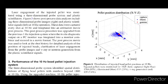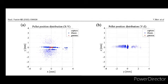Figure 5 A and B show the distributions of injected bead pellets in the horizontal X-Y and vertical Y-Z planes, respectively. The X or Y directions denote the tangential or radial direction of the rotating disk, respectively.